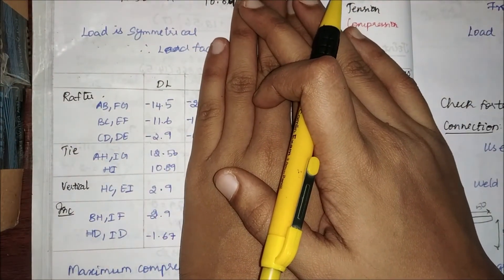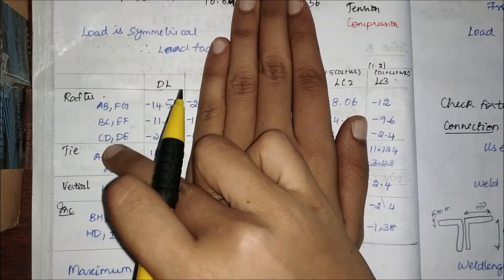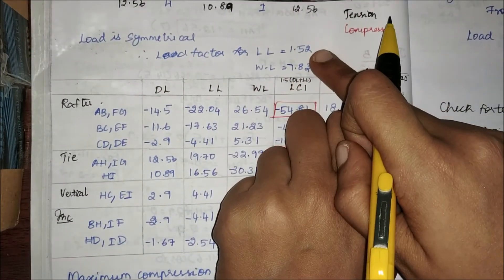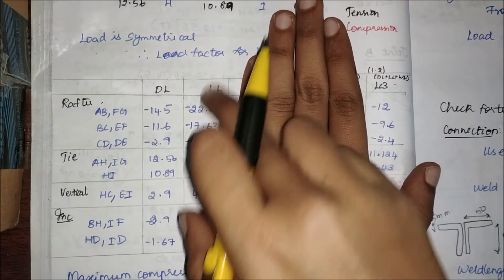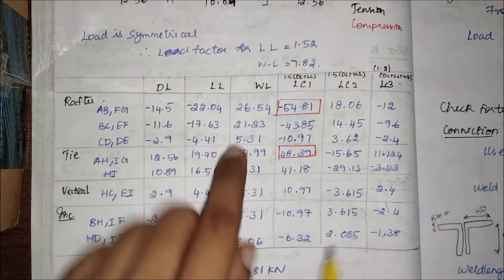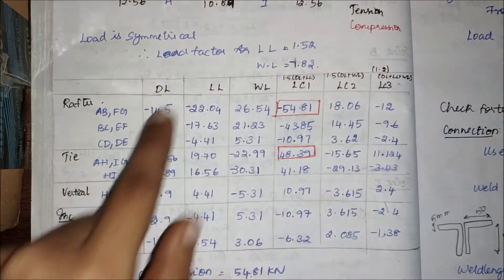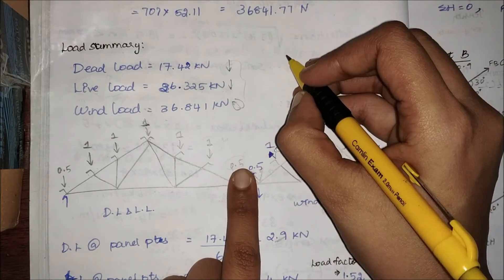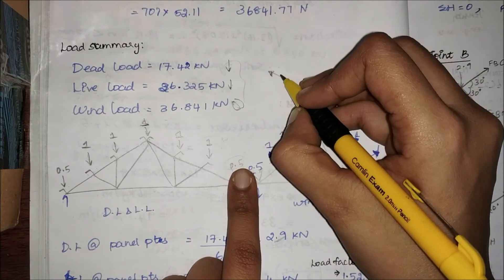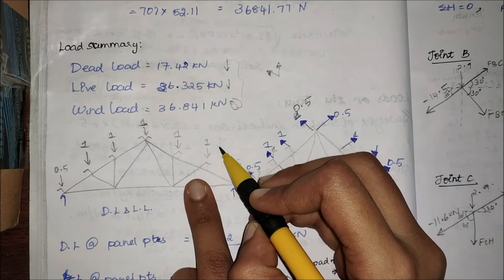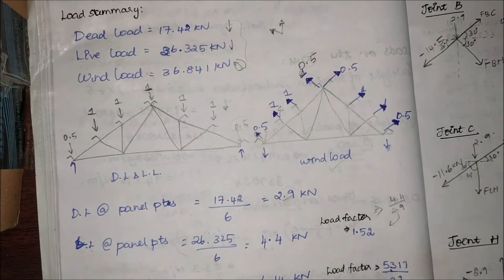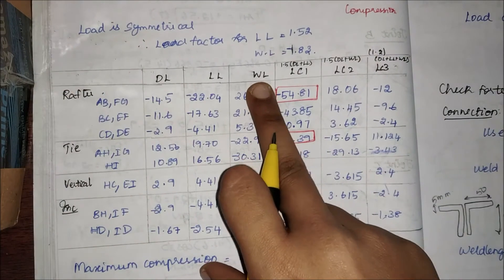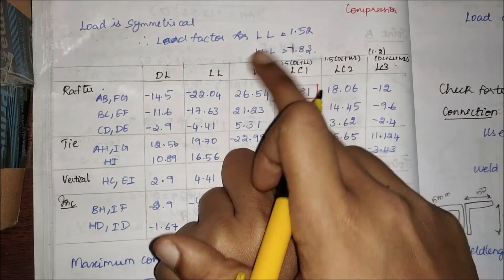Coming to the summary table, I have summarized all the values for all the rafters, ties, vertical, and inclined members separately. For dead load I have already filled it. My live load factor is 1.52, so if I multiply by 1.52 I get my live load column. For wind load, the load factor is −1.83 because wind load is away — when resolved to a vertical force it acts upward, which is opposite to the downward dead and live loads. So I multiply 1.83 with a negative sign to find my wind load column.